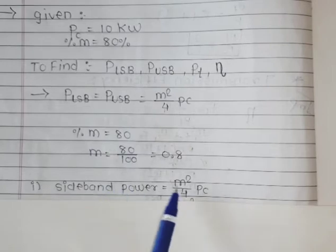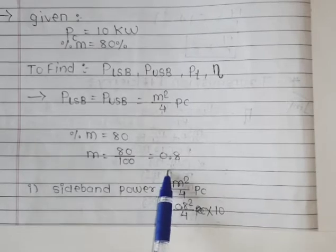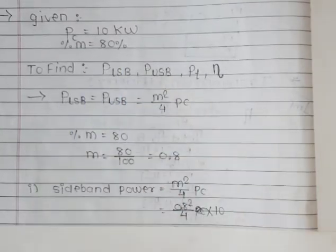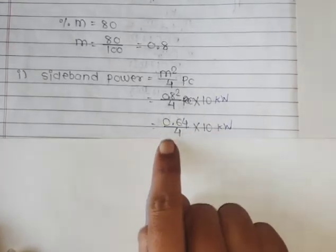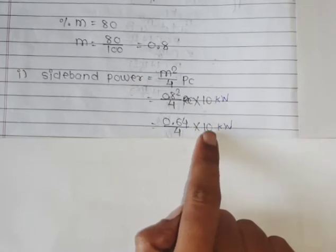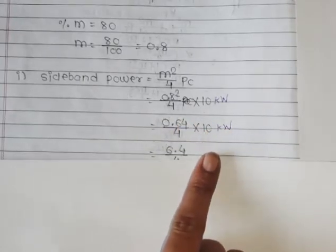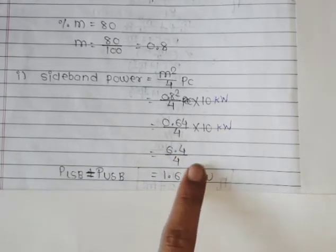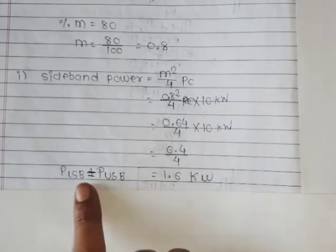Using the sideband power formula: PLSB = PUSB = m²/4 × Pc. Substituting values: m = 0.8, so m² = 0.64, and Pc = 10 kilowatt. Therefore PLSB = PUSB = 0.64 × 10 / 4 = 6.4 / 4 = 1.6 kilowatt. So each sideband power is 1.6 kilowatt.